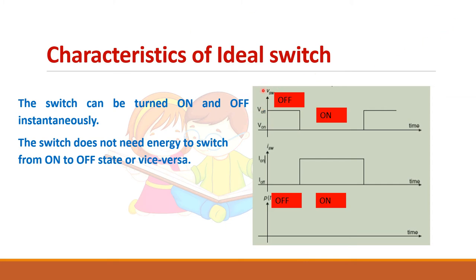This is the voltage across the switch waveform, this is the current through the switch waveform, and this is the power loss waveform. Initially, the switch is in the off condition, so the current through it is zero and there will be voltage across the switch. When the switch is on, current will be there and voltage will be zero, so the power loss is zero because power is V×I. Multiplying these values always gives zero, so for an ideal switch power loss is zero.